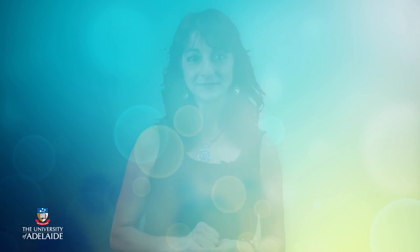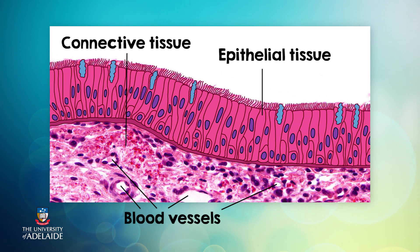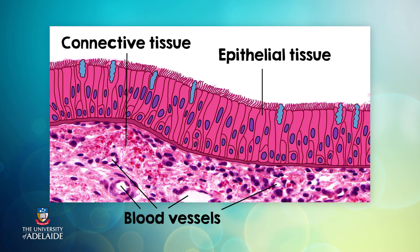Connective tissue also nourishes other tissues and has the ability to form new cells. It is a vascular tissue, which means it has an abundant blood supply. This is especially important when it comes to epithelial tissue, which has no blood supply — it relies on the underlying connective tissue to provide the medium for nutrients to diffuse across the basement membrane to reach epithelial cells.